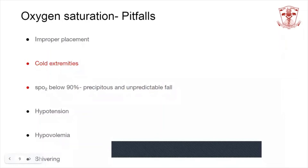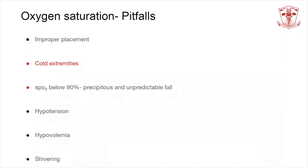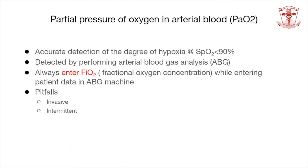What are the pitfalls associated with measuring oxygen saturation? Improper placement of the pulse oximeter will lead to inaccurate readings. Other causes of inaccurate readings include placement on cold extremities, in patients with hypotension, hypovolemia, or who are shivering. Also, when saturation levels are persistently below 90%, the pulse oximeter is not a good indicator of oxygenation level. In this scenario, the partial pressure of oxygen in the arterial blood becomes important.